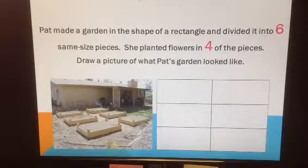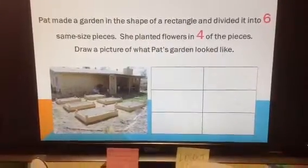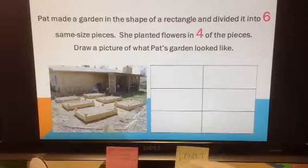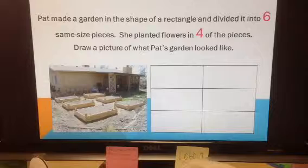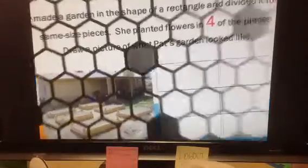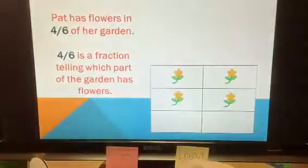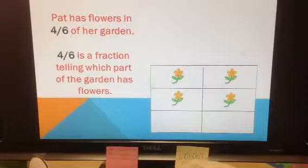Pat made a garden in the shape of a rectangle and divided it into six same-size pieces. She planted flowers in four of the pieces. Draw a picture of what Pat's garden looked like. We began by drawing this rectangle, as you see on the screen, and then we put a flower symbol in four of the six boxes. Pat has flowers in four-sixths of her garden.